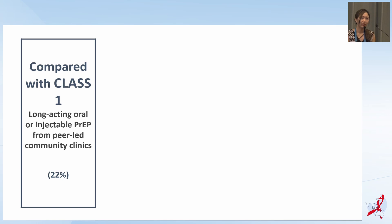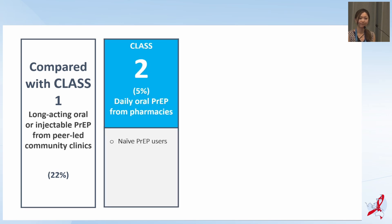Now let's look at the differences in preferences across each class. About 22% of participants were likely to be in class 1, which prefers long-acting oral or injectable PrEP from peer-led community clinics. Individuals in class 2 prefer daily oral PrEP from pharmacies, and about 5% of participants were likely to be in this class. Individuals in class 2 were likely to be PrEP-naïve users.